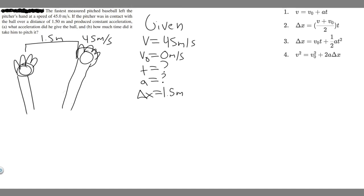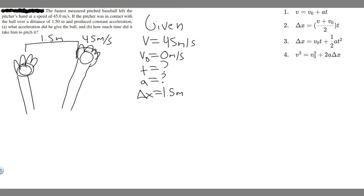So this is what we're given, and we're going to solve for part A: what acceleration did he give the ball? We're trying to find A. Looking at our kinematic equations — these are used for constant acceleration, which the problem tells us we have. We're given delta X, V sub 0, and V. The equation V squared equals V sub 0 squared plus 2A times delta X contains all these variables and A, so we're going to use that one.